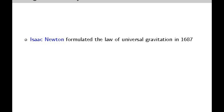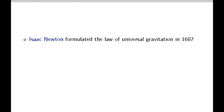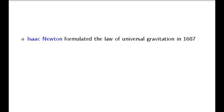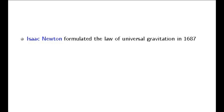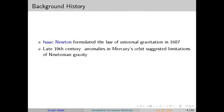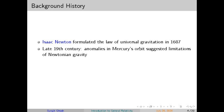In 1915, Einstein finally presented the full theory of general relativity. Shortly after, Karl Schwarzschild, serving in the German army during World War I, found an exact solution to Einstein's equations describing the space-time around a spherical, non-rotating mass, leading to the concept of what we now call a black hole. In 1919, during a solar eclipse, Arthur Eddington's expedition observed the bending of starlight by the sun, confirming Einstein's prediction and providing a stunning validation of general relativity.